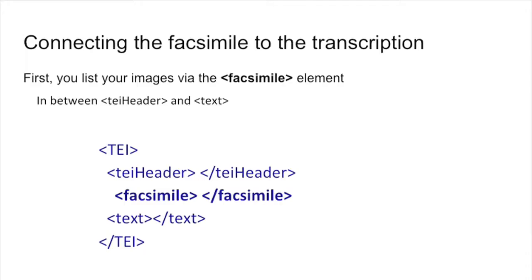Once you have done that, you may want to consider how to connect your markup with images. It is now custom to present your transcriptions side by side with your image, the image of the facsimile. You use an element called facsimile in TEI. The facsimile is an element that encodes a big section, which is to be found in between the TEI header and the text. So you have your TEI element, which is the root element; you have the TEI header where we put the metadata; and then you have the facsimile. After the facsimile is finished, you put the text. You will list within the facsimile element all the images you need to connect to the transcription.